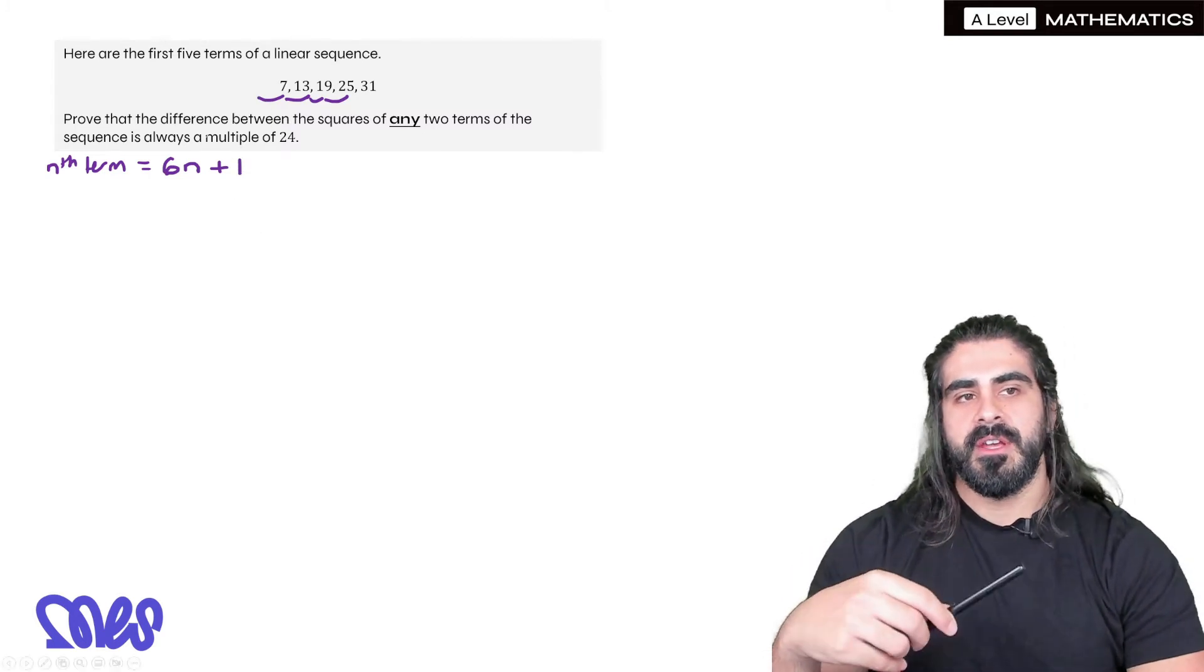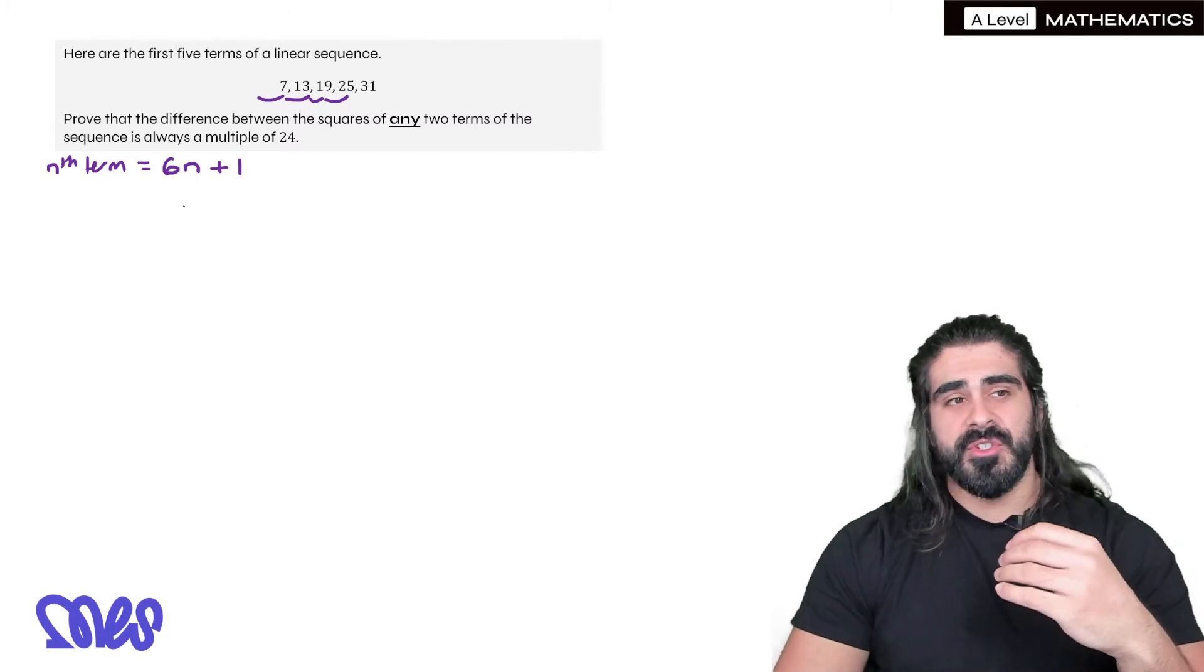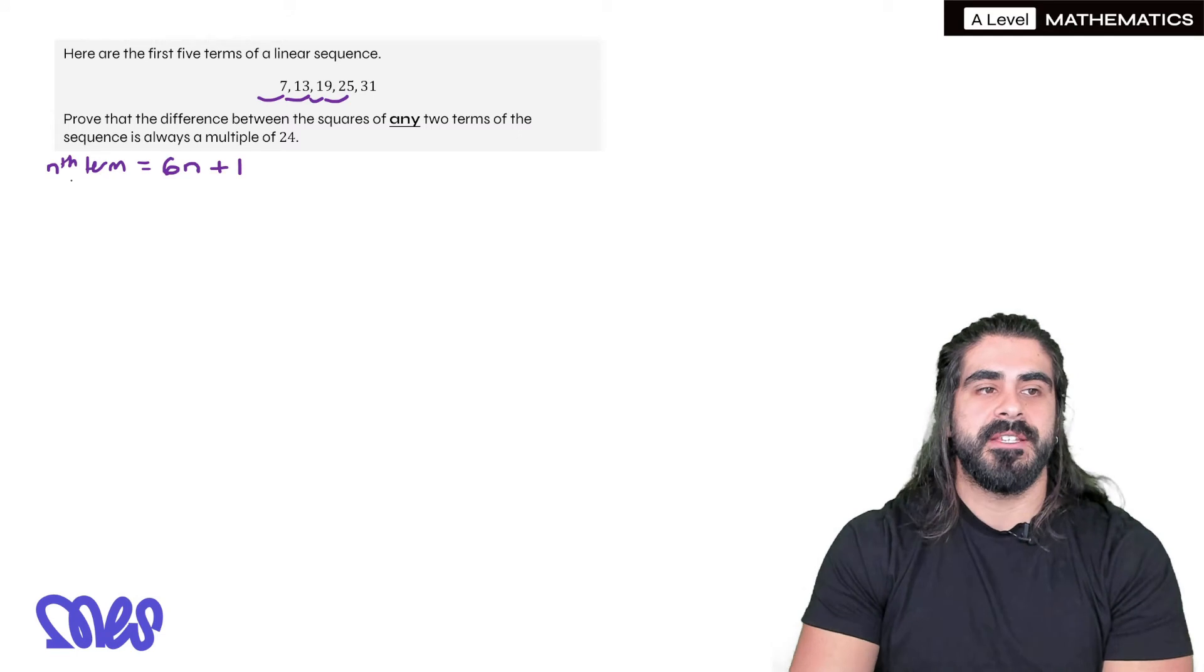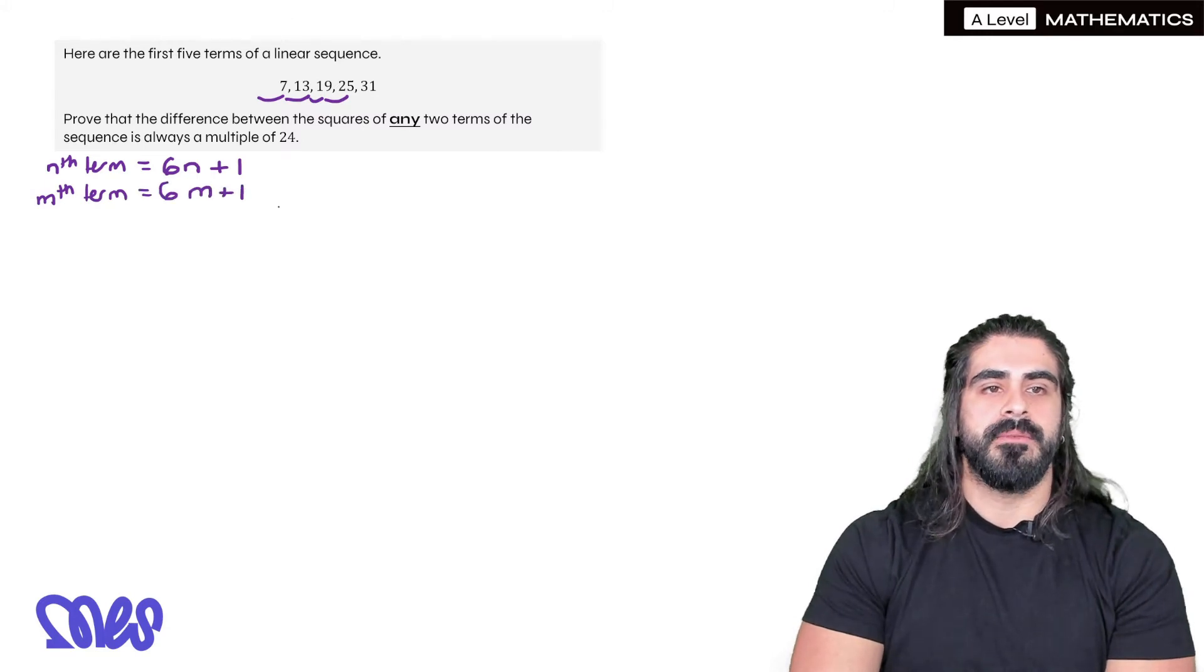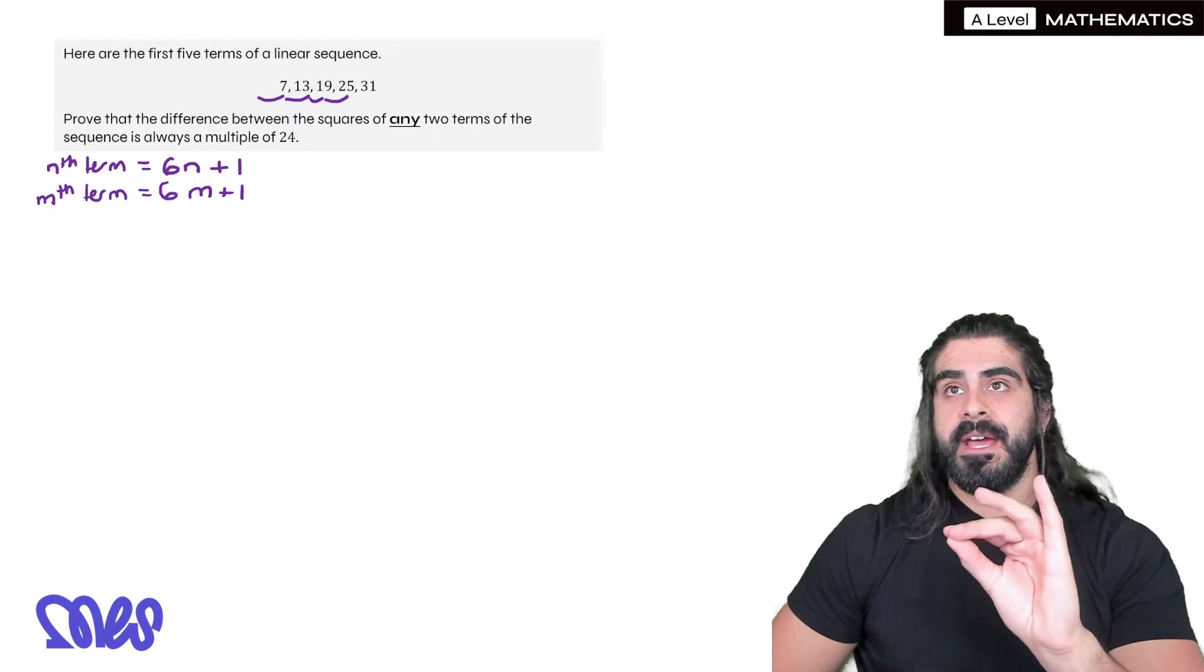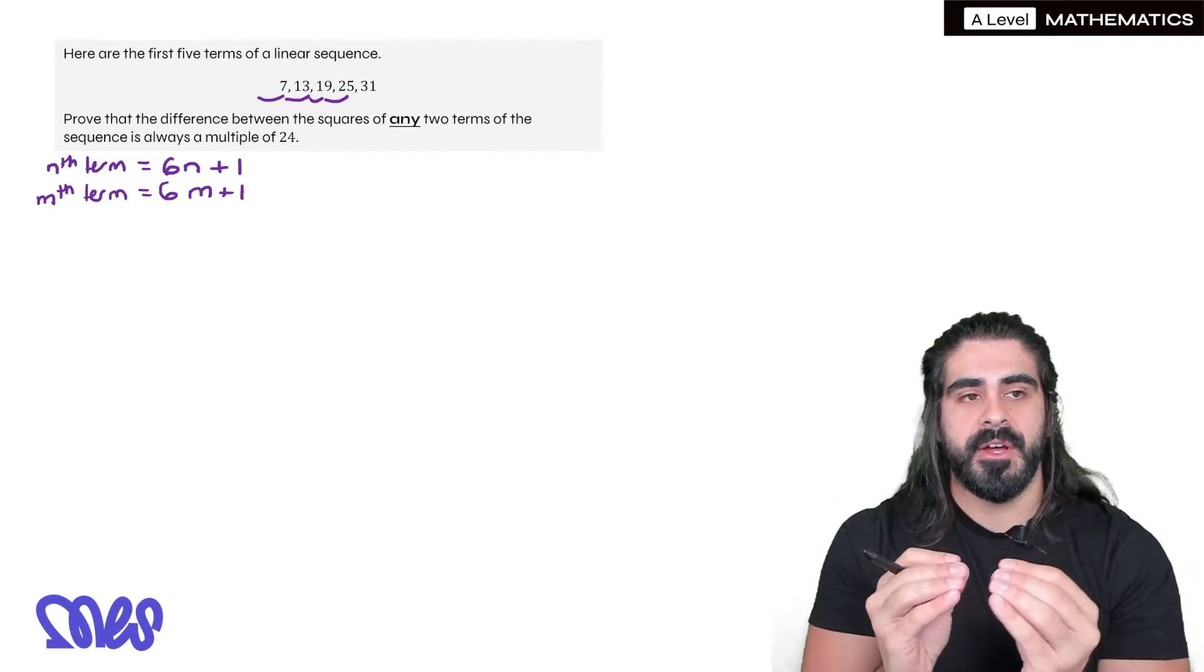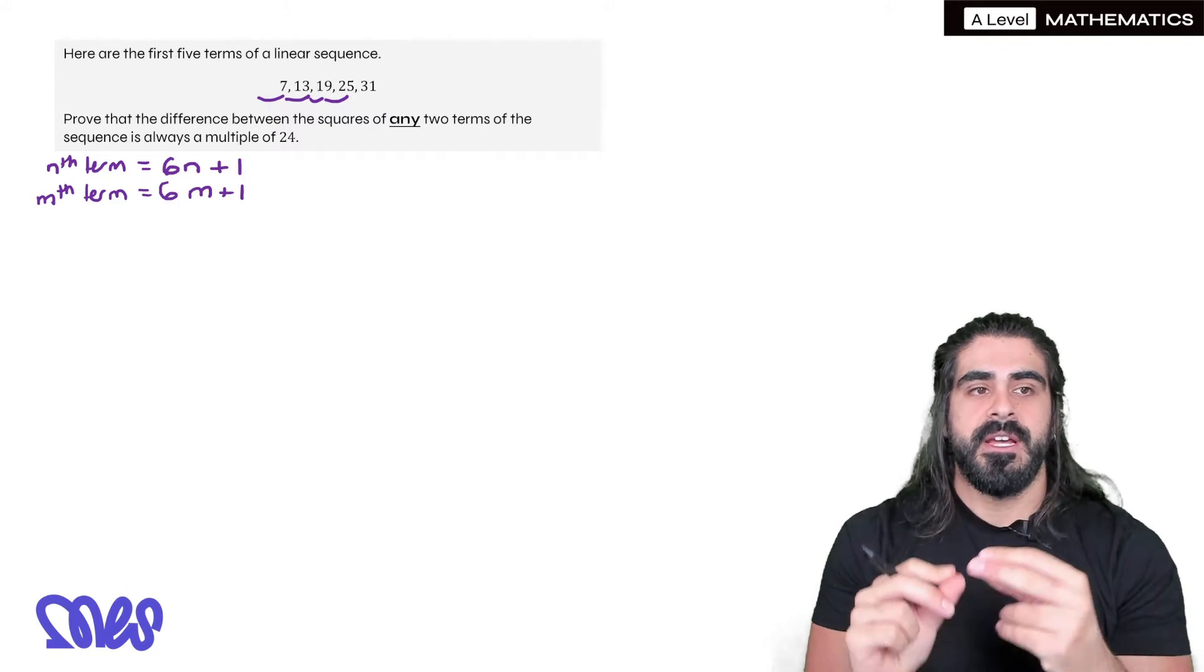Now he's saying prove that the difference between the squares of any two terms. So what do we mean by any two terms? Well what a lot of students do is they'll do 6n plus 1 and then they would add 6 to that and say that's the other term. But you can't add 6 because that's the next term. We want any two terms. So the way we deal with any two terms is we write down the exact same sequence, but we change the letter. So it'll be 6m plus 1. So if n and m are the same, then the exact same term. If m is one bigger than n, then it would be the next term in the sequence. Or if n and m are just completely random numbers, then they are any just any two terms of the sequence. So this is being very thorough, is saying we're going to prove whether they're the same, whether they're consecutive or just any random terms in the sequence, then the difference between the squares is always a multiple of 24.